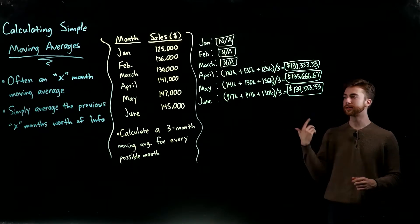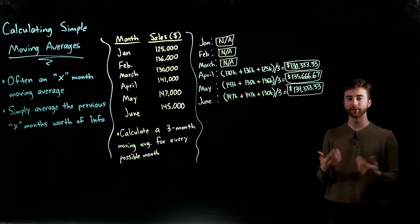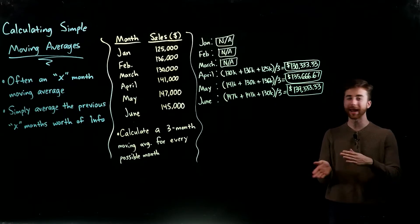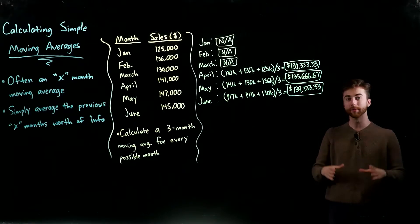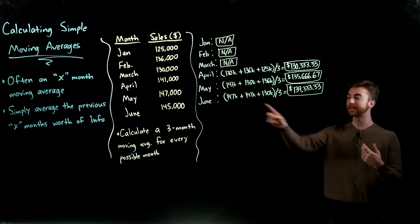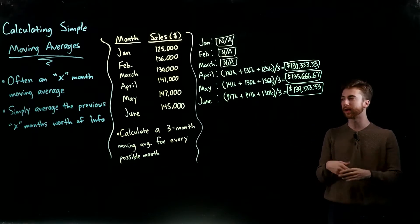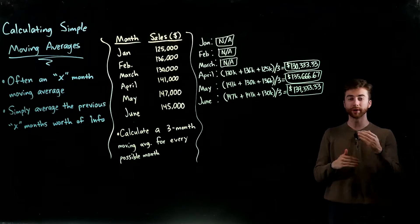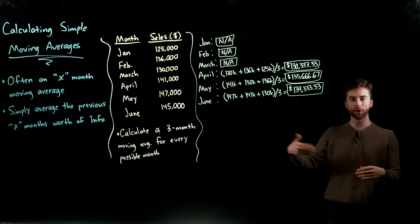You're often going to see it worded in your stats problems or whatever you're doing as an X-month moving average. It might be based on years or any sort of time frame, but you're going to be given the time frame they want the moving average for. I say months because we're dealing with months here, but you can do years or whatever time frame. You're simply going to average the previous X months or whatever period of time worth of information that you have.